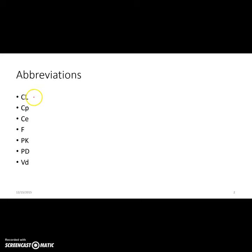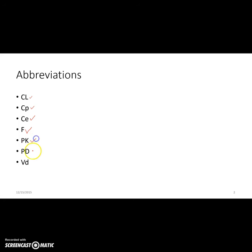These are some of the abbreviations we usually use in talking about pharmacokinetics and pharmacology in general. We have CL for clearance, CP for plasma concentration, CE for effect site concentration — which won't be covered in this lecture — F for bioavailability, PK for pharmacokinetics, PD for pharmacodynamics, and VD for volume of distribution.